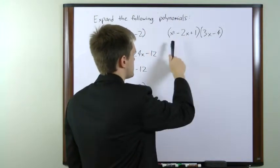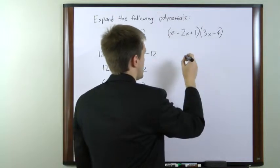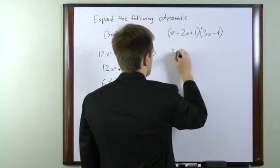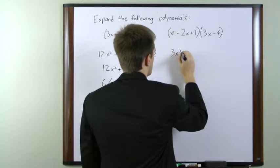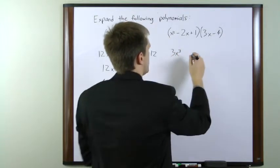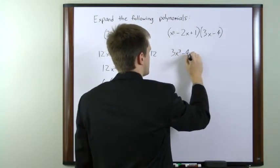So the first in order is going to be x squared times 3x. So that gives us 3x cubed. x squared times negative 4 gives us negative 4x squared.